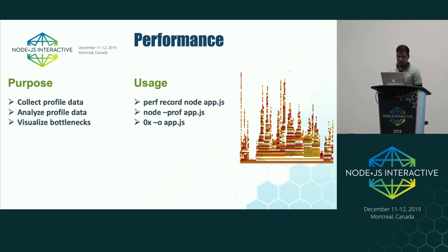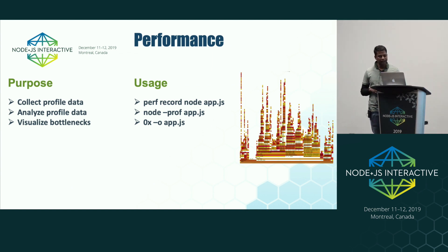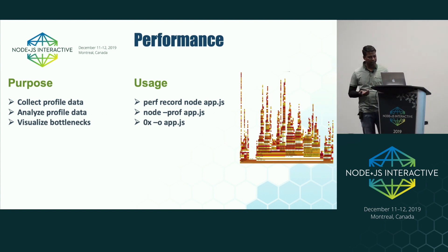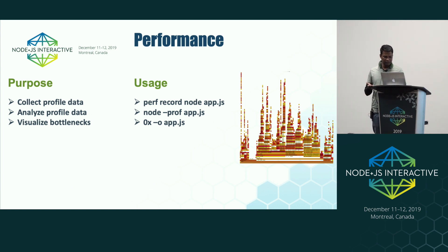A flame graph is a two-dimensional graph with two parameters: call depth — the height of the graph represents a sequence of calls, so if A calls B and B calls C, that ABC chain forms one vertical pillar — and color coding, ranging from light amber to dark red. Light amber means very little CPU is spent on that method; dark red means the opposite, that's where most CPU is spent. You can expand each pillar and zoom in to see method signatures and the finest level of detail.